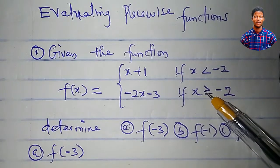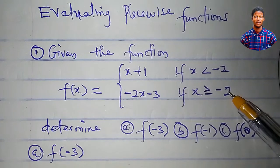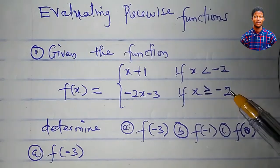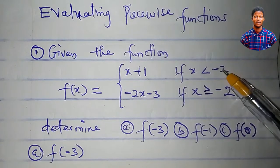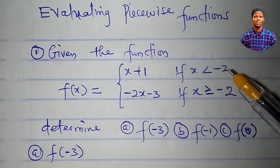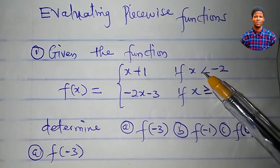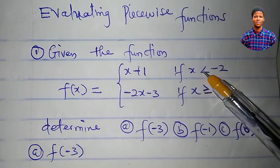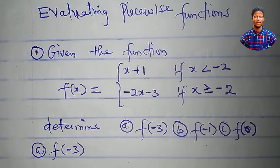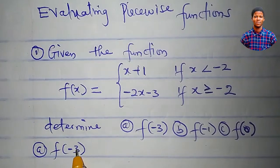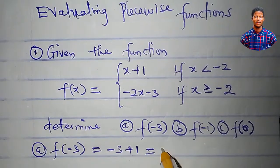Numbers greater than or equal to minus 2 include minus 2 itself, minus 1, 0, 1, 2, 3, 4, and so on. Numbers less than minus 2 are minus 3, minus 4, minus 5, minus 6, and so on. So it is the interval x less than minus 2 where we locate minus 3. Therefore, to evaluate f(minus 3), I will use x plus 1. In place of x I write minus 3, giving minus 3 plus 1, which equals minus 2.